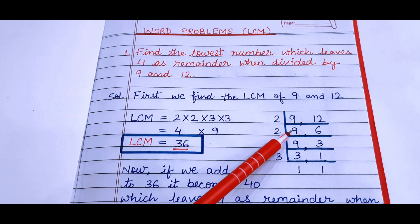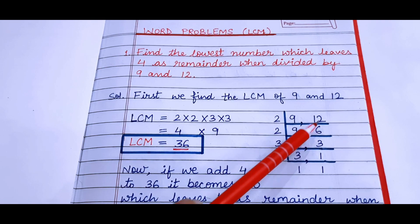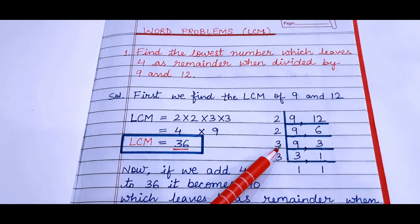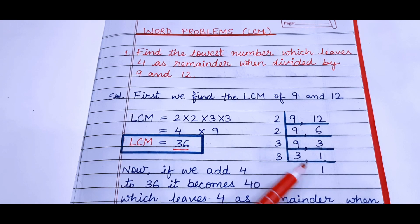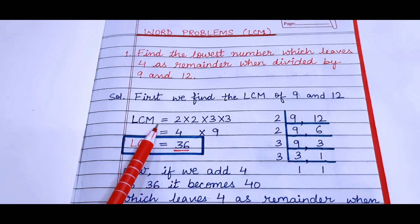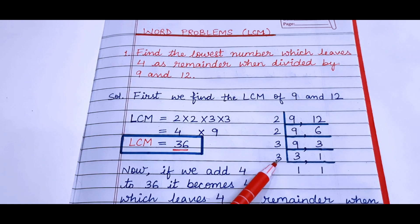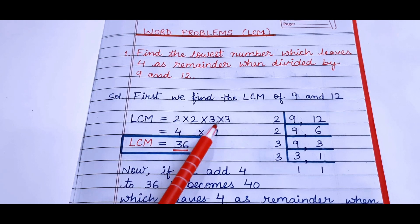So 9 is not divisible so we will write 9 as it is. 2 sixes are 12, 2 threes are 6, 3 threes are 9, 3 ones are 3, 3 ones are 3 and 1 we have copied. So the LCM is 2 × 2 × 3 × 3.